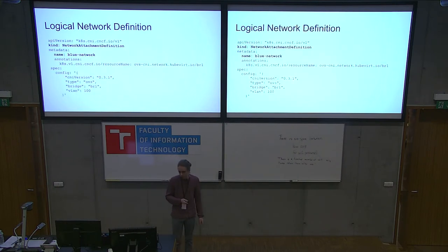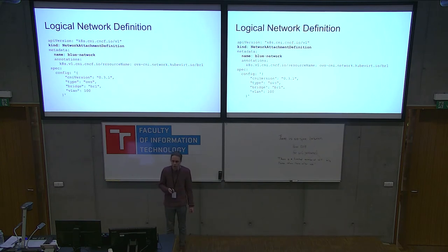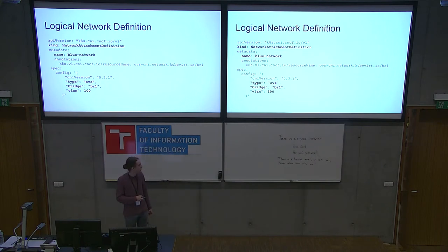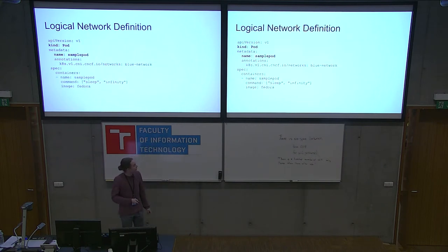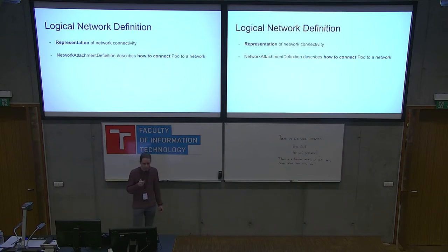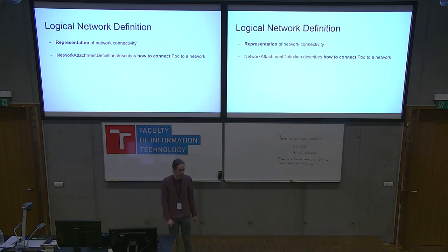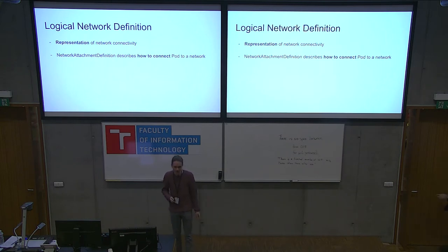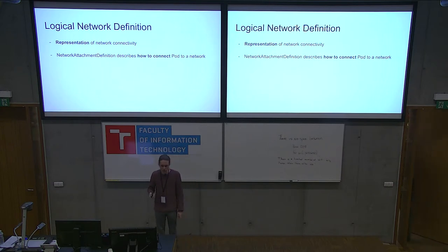Based on the logical network definition, they are connected using a bridge and maybe some VLAN, but it doesn't matter for the user — they just require the blue network. This is what the definition looks like: a network attachment definition called 'blue network' that says connect me to OVS bridge, bridge one, and tag it with VLAN 100. The user then requests it using an annotation. So the second pillar — logical network connectivity — represents connectivity to a certain logical network, and with Multus and the de facto standard we use an object called network attachment definition to achieve that.